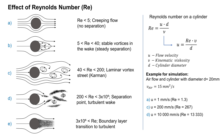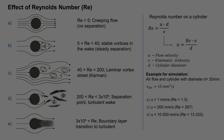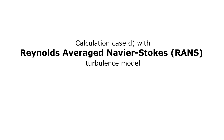It is a turbulence case and after this I compare additional two turbulence models. The first turbulence model is Reynolds Averaged Navier-Stokes, the RANS model.